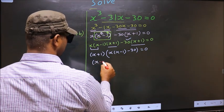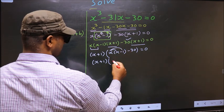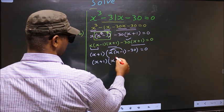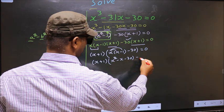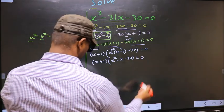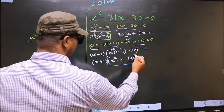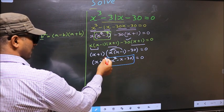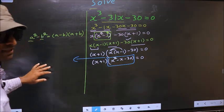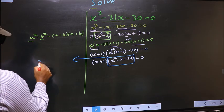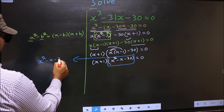Now x plus 1 — here you open up the brackets. You get x squared minus x minus 30 equal to 0. Now we got a quadratic, so I will factorize this quadratic. That is x squared minus x minus 30.